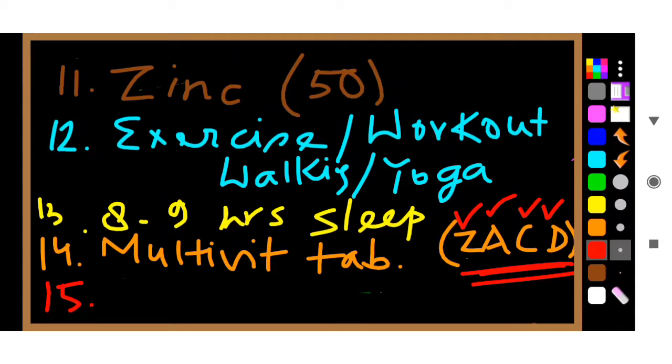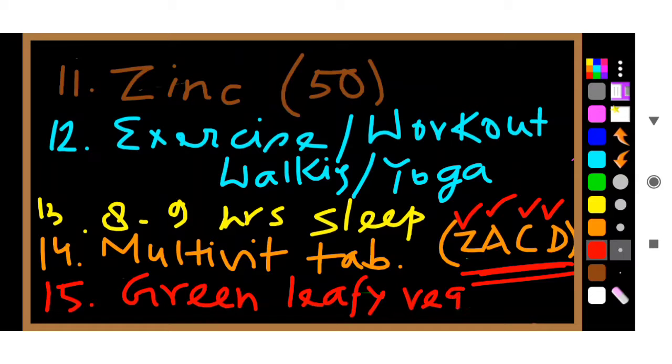Number 15 is taking green leafy vegetables. These are also very important. You can take any vegetables which have green leaves. This will help you in getting over from post-COVID-19 weakness.